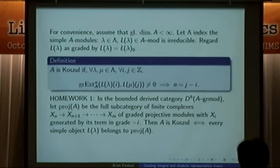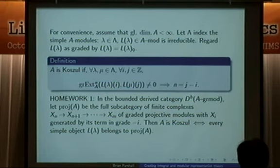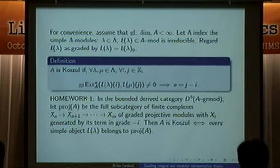Often, even though our algebra is graded, we'll consider the ungraded Ext groups. And it will also be convenient to assume that A has finite global dimension. We fix a set capital Lambda which indexes the simple A modules. For lambda in capital Lambda, L of lambda is the corresponding simple A module.